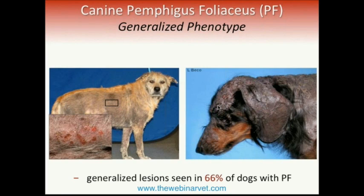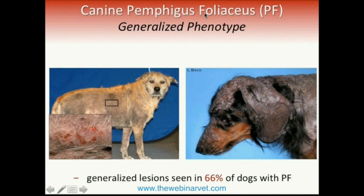Eventually, Pemphigus cases will progress into a generalized phenotype, meaning the trunk and the rest of the body will show clinical signs as well. About 66% of dogs will show generalized lesions. Generalized lesions combined with the facial phenotype make for a fairly easy diagnosis. But if you have only truncal lesions in Pemphigus foliaceus, that is when confusion arises and the diagnosis becomes markedly more difficult — which is what we will discuss towards the end of the lecture.